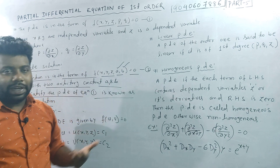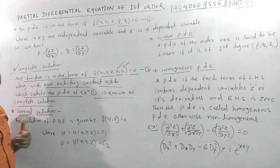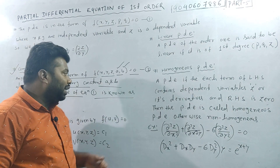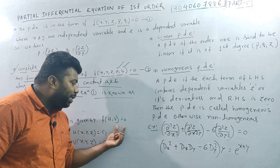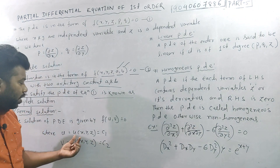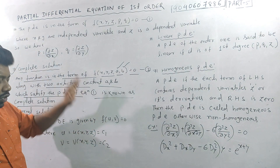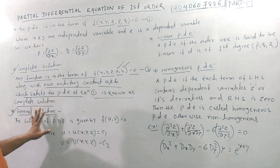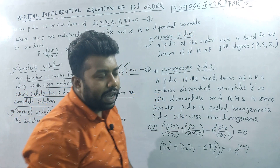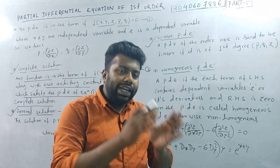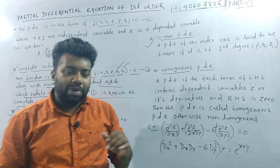If f of x, y, z, a, b is the complete solution with a and b as arbitrary constants, and we satisfy the equation, then u, v is equal to 0 — where u of x, y, z equals c1 and v of x, y, z equals c2, and the function f of u, v equals 0. This corresponds to the linear partial differential equation form.